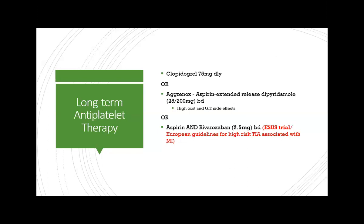When choosing a single agent for long-term therapy, clopidogrel is usually preferred — particularly if the patient has had a prior stroke, suggesting aspirin alone was insufficient. Alternatively, Aggrenox (aspirin extended-release plus dipyridamole) can be used, though it is costly and has more GI side effects. In a small number of cases — TIAs associated with previous cardiac insults such as MI — aspirin plus low-dose rivaroxaban may be considered.